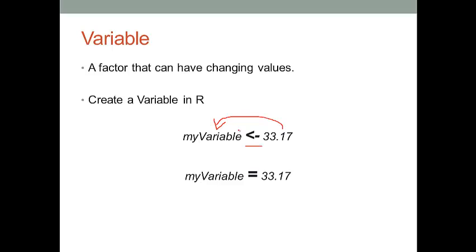The second option is very similar. On the left we have the variable name, on the right we have the variable value, and in the middle we use a single equal sign. This also means you want to give the value on the right to the variable name on the left. You can choose either of these options to create a variable in R, but in practice we prefer the first option.